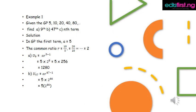Example one: given the GP 5, 10, 20, 40, 80, find (a) the 9th term, (b) the 47th term, (c) the nth term.